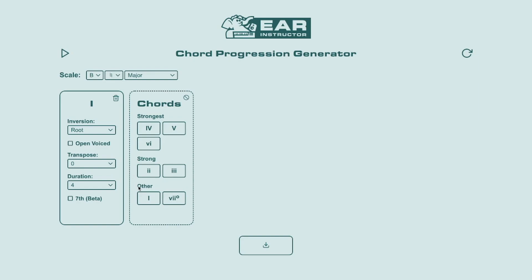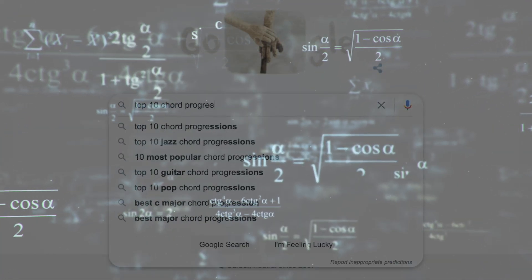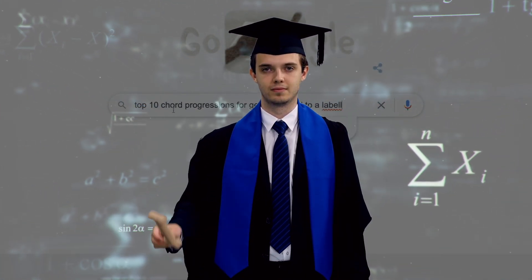These ratings indicate which chords are most likely to follow the previous chord. So for a major scale, a 1 chord is most likely to be followed by a 4, 5, or 6 chord. A 1 chord is less likely, but not uncommonly, followed by a 2 or a 3 chord. And a 1 chord is least likely to be followed by a 7 chord. The strength ratings were determined using multiple chord-leading charts and analyses of popular music.